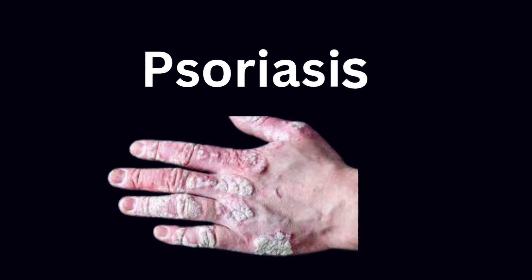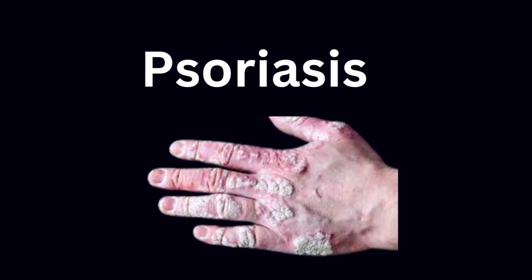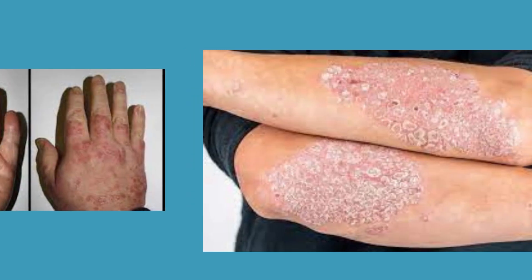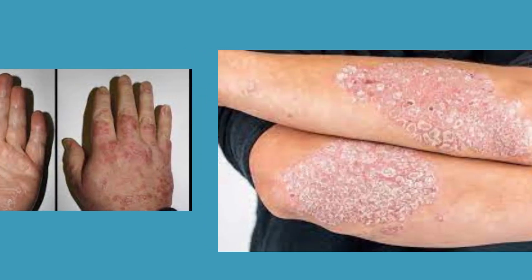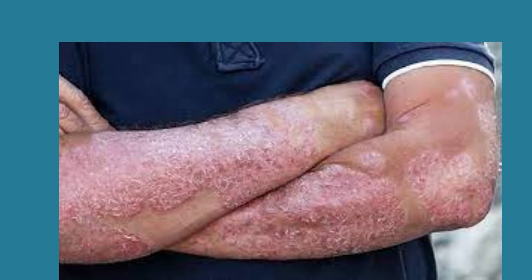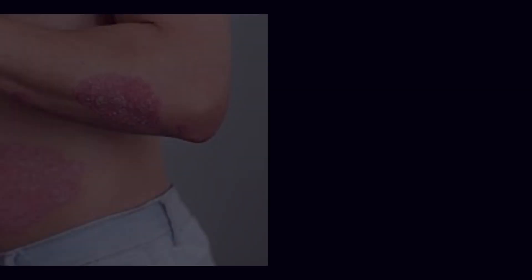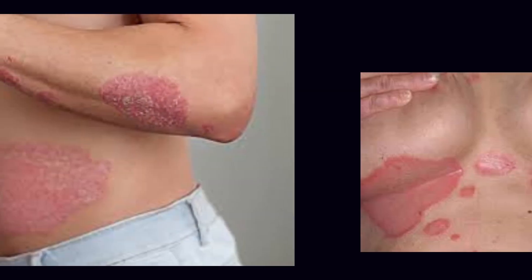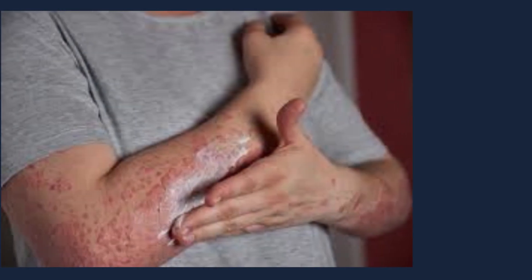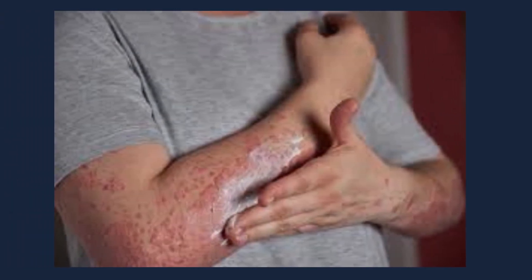7. Psoriasis. Psoriasis is an inflammatory condition that affects the skin. About 5% of people with HIV may get psoriasis, and 10% of those may also develop psoriatic arthritis. Sometimes, starting HIV treatment can make psoriasis worse, but in many cases, the treatment helps it go away.